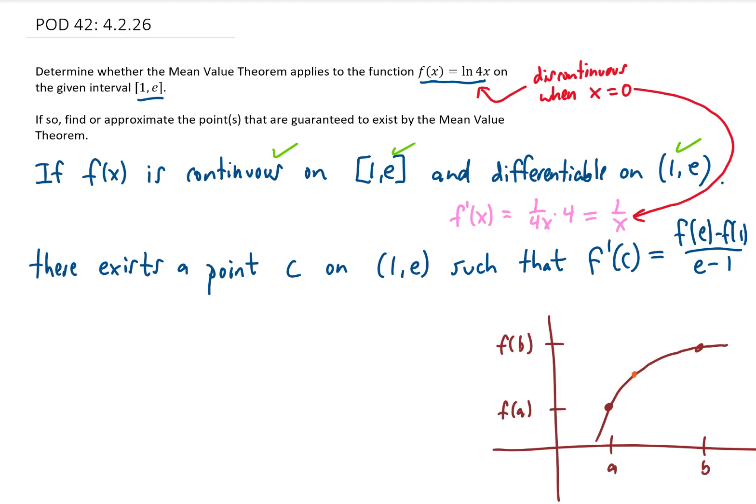then there is some point between a and b where the slope of this tangent line, or the instantaneous rate of change of that function, is equal to the slope of this secant line, or the average rate of change of this function. We call this particular x value that falls between a and b c, and the slope of this tangent line we call f prime of c, and we're saying that equals the slope of this secant line.